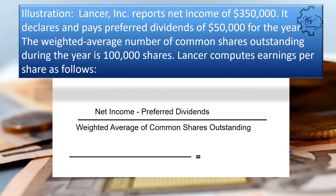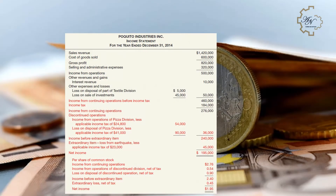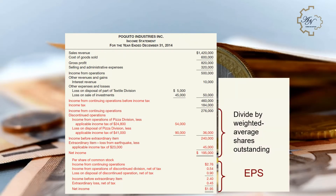Illustration: Lancer Incorporated reports net income of $350,000, declares and pays preferred dividends of $50,000, and has a weighted average of 100,000 common shares outstanding. EPS = ($350,000 − $50,000) ÷ 100,000 = $3.00 per share. As shown, all relevant income figures are divided by the weighted average shares outstanding.